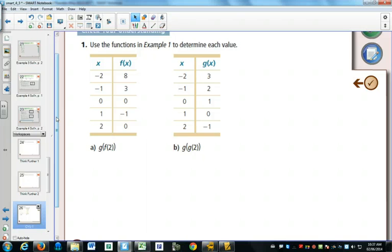So here are two functions. For g of f of 2, work on the inside first. Ask yourself, what is f of 2? Which one would I use, the first column or the second one? First column because that's our function f. What are we plugging into f? We're plugging in a 2. What would come out? A 0. So f of 2